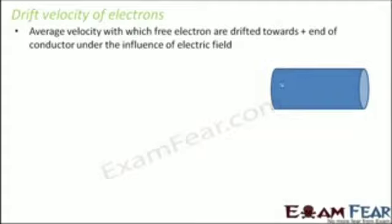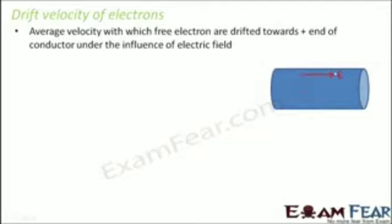Let's say that this is a conductor and you have electrons inside it. When you apply an electric field E, all the electrons inside the conductor get drifted — they start moving slightly towards the positive end of the conductor. Until and unless you do not apply this electric field the electrons do not get drifted, but the moment you apply the electric field the electrons get drifted in the opposite direction of the applied electric field. So if the applied electric field E is in this direction, then the electrons will get drifted in this direction with a velocity which is the drift velocity.